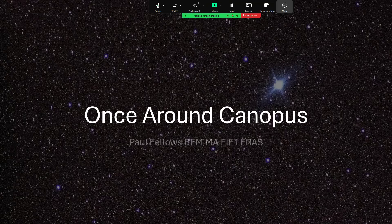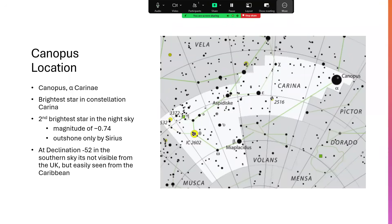Once around, Canopus. Canopus is the second brightest star in all of the sky, second only to Sirius.